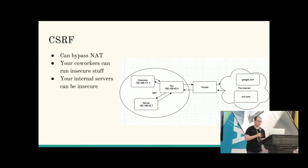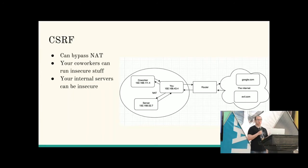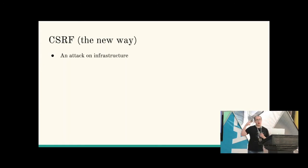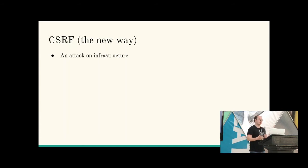What I really want to focus on is: your web browser sits on a lot of different networks — localhost, your corporate network. If you're not running a BeyondCorp situation, your browser can talk to your coworkers. You may visit evil.com, and evil.com has the ability to make requests to an internal server. I want people to think about cross-site request forgery not just as an attack on users, but as an attack on your infrastructure — malicious JavaScript can make arbitrary requests to your internal network.